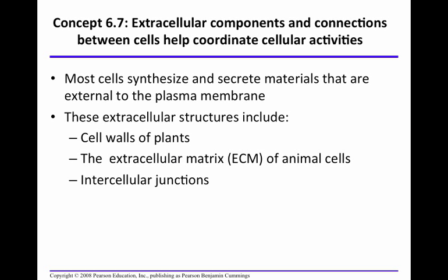There are extracellular components and connections between cells that help coordinate cellular activities. Most cells synthesize and secrete materials that are external to the plasma membrane — that means they're outside of the plasma membrane. These extracellular structures outside of the cell include cell walls, the extracellular matrix, and intercellular junctions.